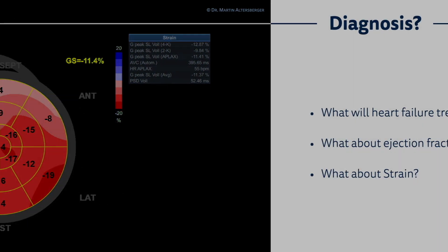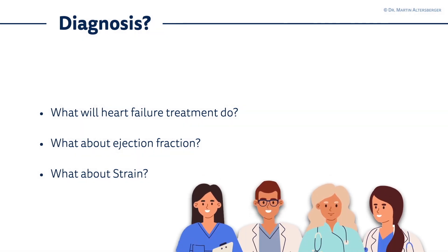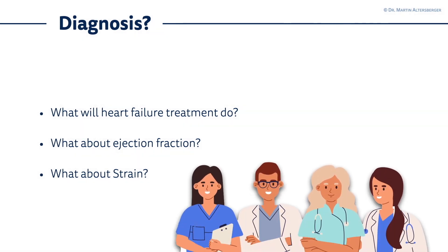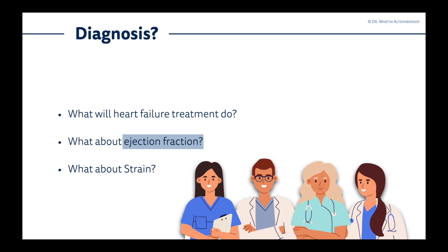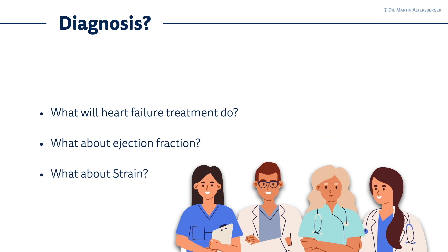The questions now are: what is the diagnosis, what will heart failure treatment do in this patient, and what will happen to ejection fraction? We already saw a follow-up exam — EF was not only 15 but probably a little bit more. Will strain also improve with heart failure treatment, as we might expect from ejection fraction?